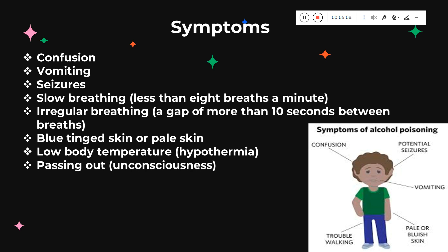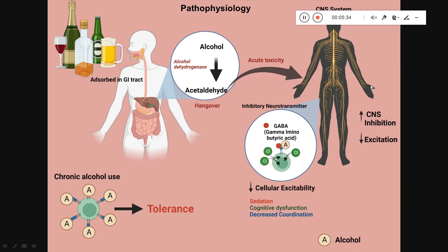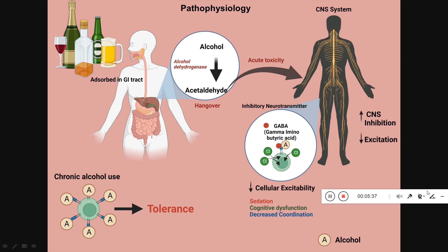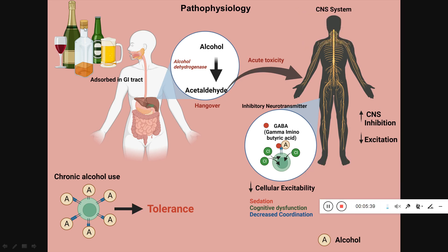Coming to the symptoms of alcohol poisoning: it can lead to confusion, vomiting, and seizures. It can cause slow breathing where breathing rates reduce, or irregular breathing with variations. The skin can start becoming pale, body temperature becomes low — that is called hypothermia — and it can even lead to unconsciousness.